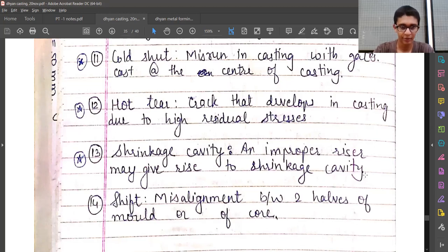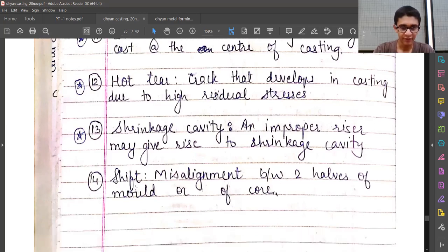Fourteenth is shift, which is misalignment between two halves of a mold or a core. That is also very simple—we have two parts of a mold and if one of them is shifting, that is misaligned, then we will have a bad casting.